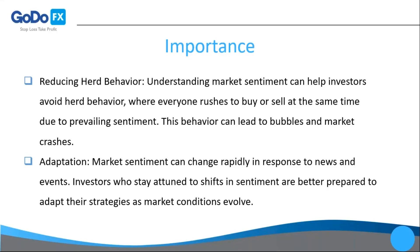Seventh, it reduces herd behavior — understanding market sentiment can help investors avoid herd behavior, where everyone rushes to buy or sell at the same time due to a prevailing sentiment. This behavior can lead to bubbles and market crashes. Eighth, adaptation — market sentiment can change rapidly in response to news and events, and investors attuned to shifts in sentiment are better prepared to adapt their strategies.